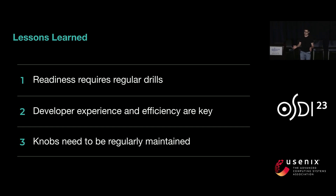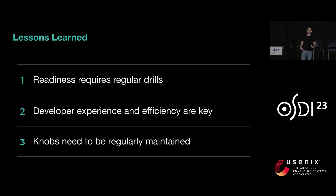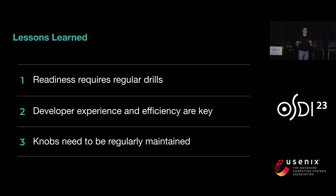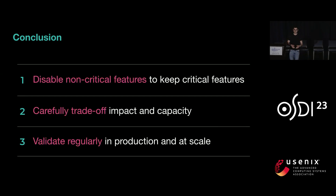We've been using DEFCON in production for around four years, and here are a few lessons learned. First, readiness requires regular drills — we can't just build the system and hope it works; we test in production and at scale. Second, developer efficiency and experience are key; we wouldn't have achieved wide adoption without focusing on how developers actually use it and providing actionable insights. Finally, knobs need to be maintained regularly — it's not enough to define a knob and let it sit there, as code can change and be refactored. That's graceful degradation with DEFCON, and maybe the next time you encounter a broken escalator, you'll think about the benefits of graceful degradation.